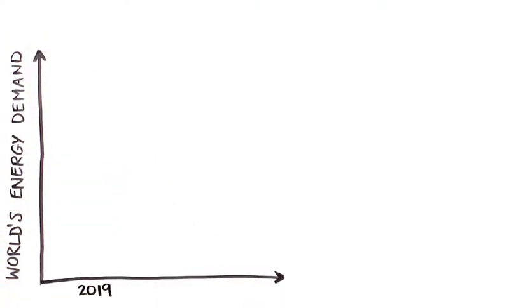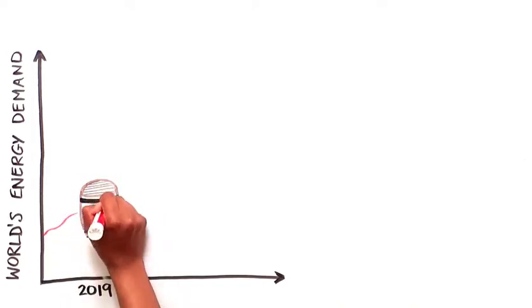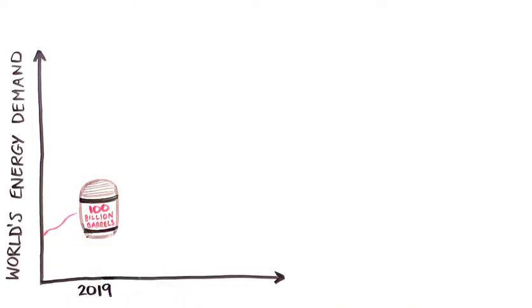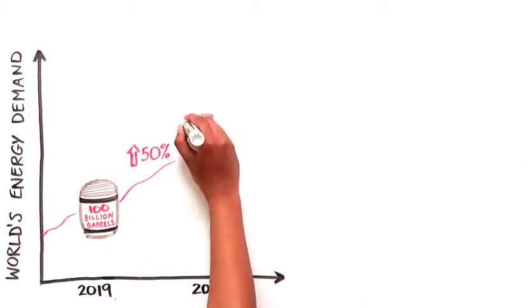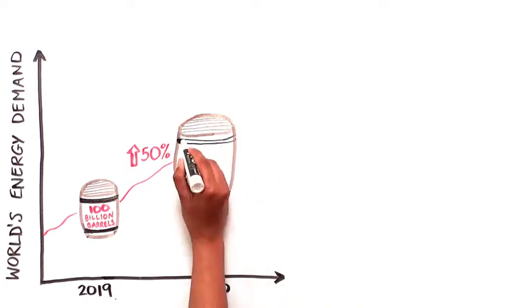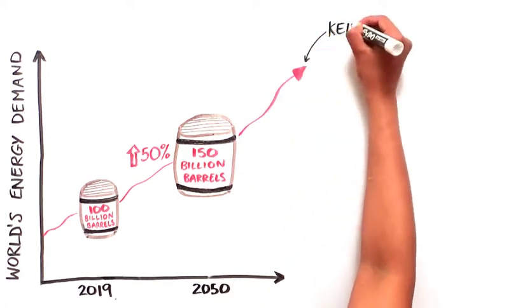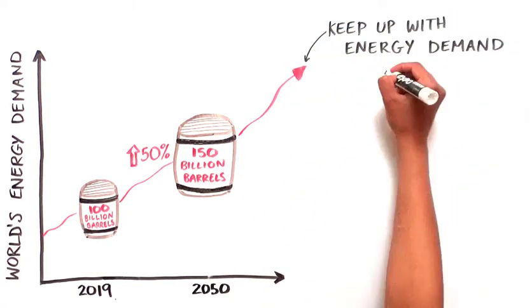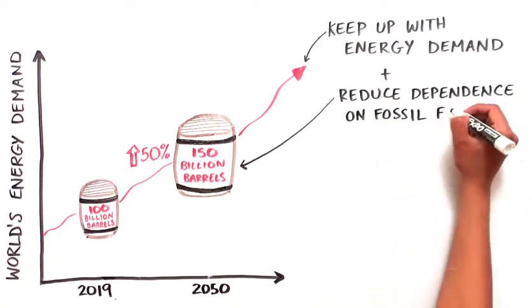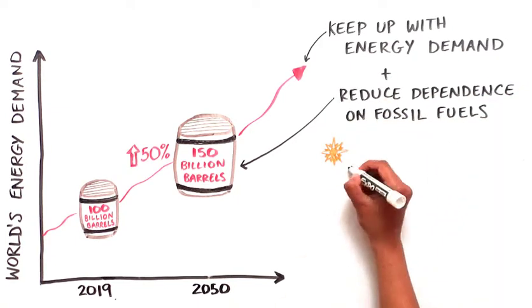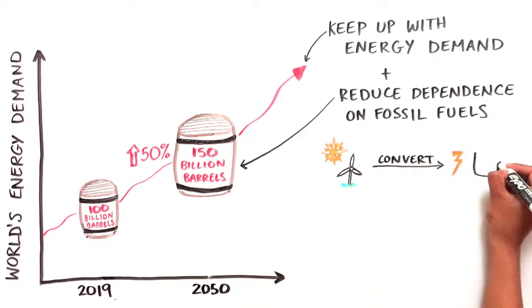We use an enormous amount of energy every year. In 2019, it's estimated that the world consumed the equivalent of 100 billion barrels of oil in energy for transportation, manufacturing, agriculture, and nearly all other industrial processes. By 2050, global energy consumption is projected to increase by about 50 percent, equivalent to 150 billion barrels of oil. To keep up with the rapid rise in global energy demand while also reducing our dependence on fossil fuels, we need to develop more efficient ways to convert renewable energy into clean electricity and fuel.